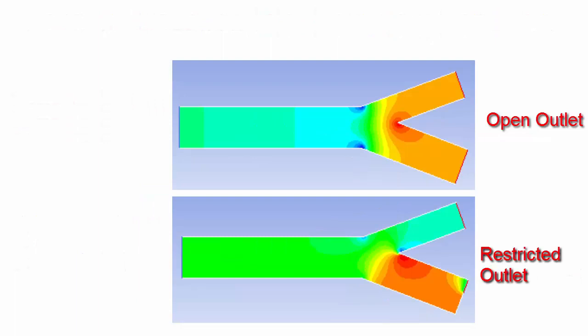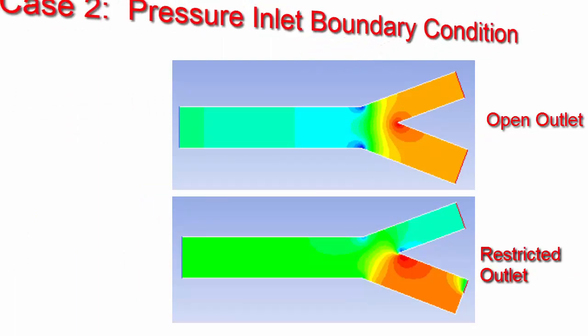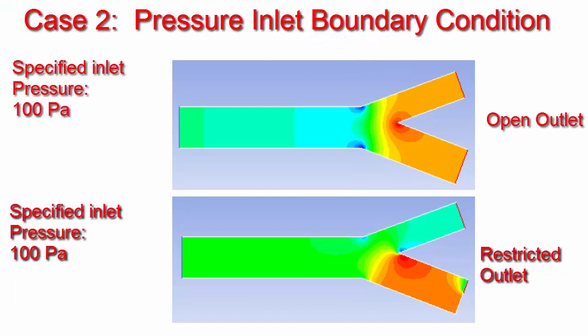I have also repeated the same by specifying a pressure inlet boundary condition. Here the results show that irrespective of the geometry conditions, the pressure at the inlet maintained at 100 Pascals.